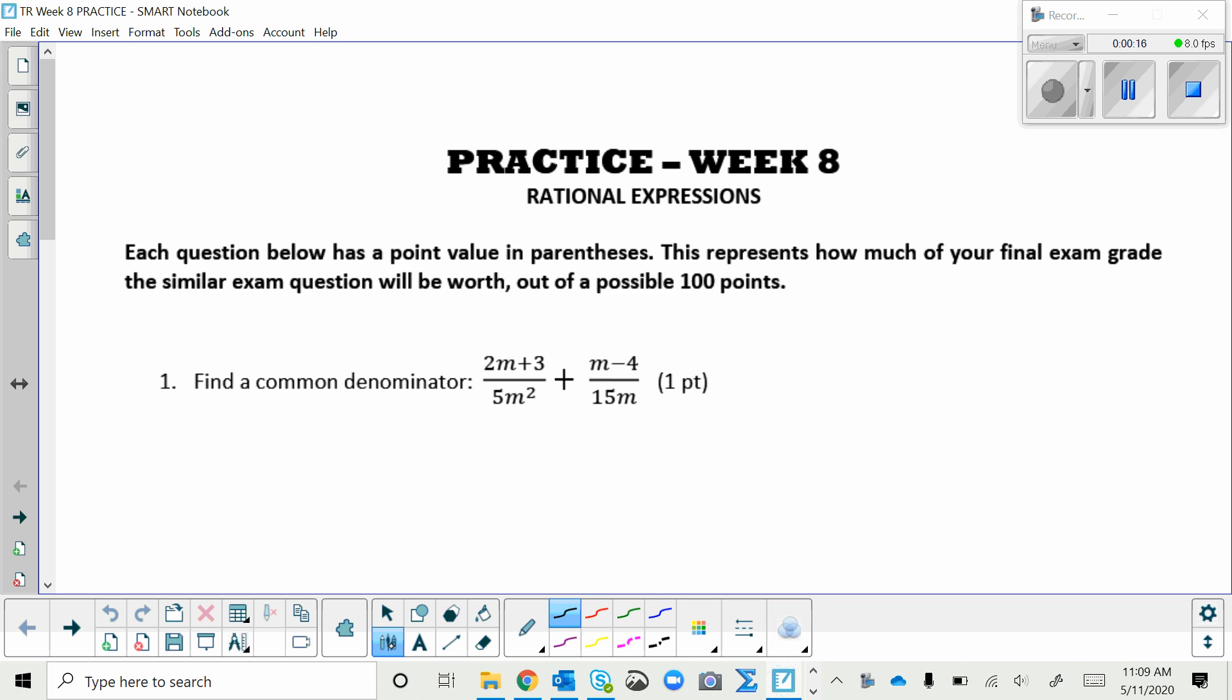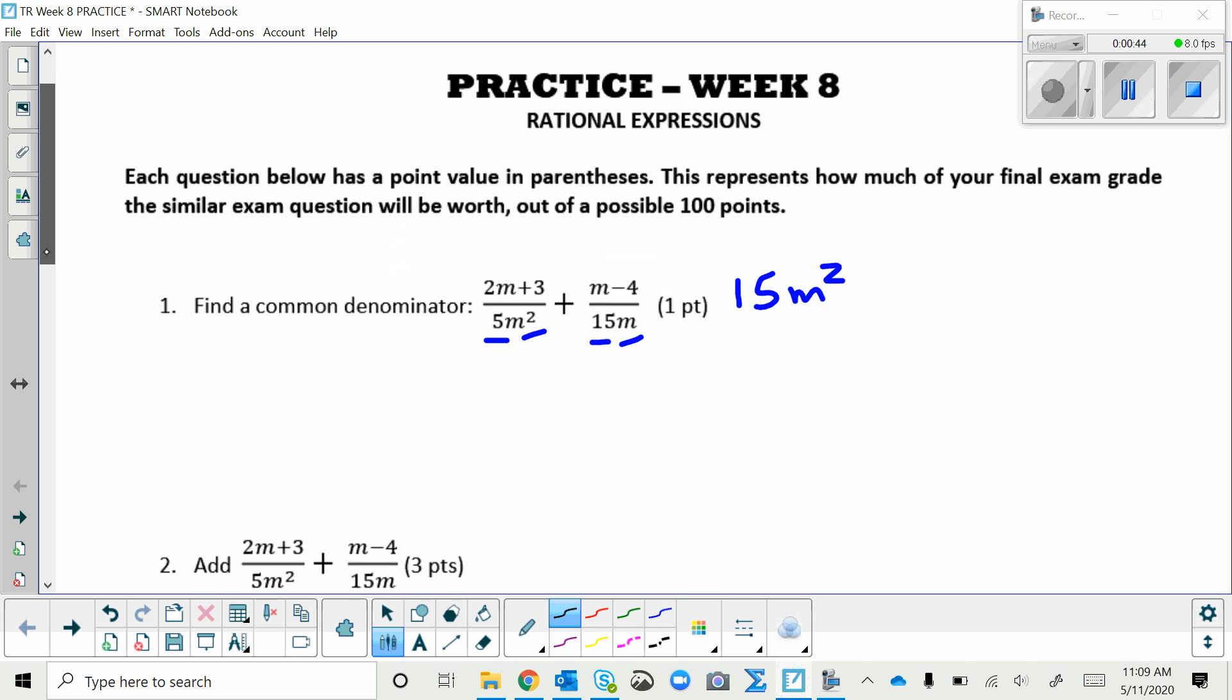For this first problem, we're still finding a common denominator. Now if you're doing it ninja style, you're just looking at the 5 and the 15 and saying, oh okay, their least common factor for them is 15. And then if you look at m squared and m, and you're just doing it in your head, you could figure out that m squared is the smallest thing that they could both have in common. If this is something that's hard for you to do off the top of your head, then you can follow these steps.